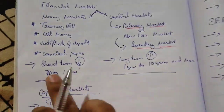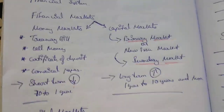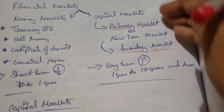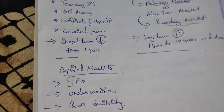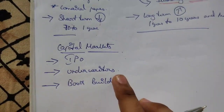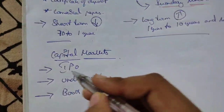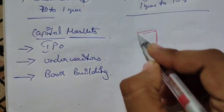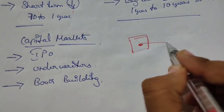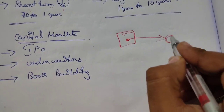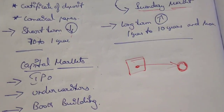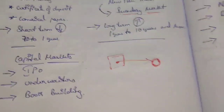Capital market includes a few important points: IPO (Initial Public Offering), underwriters, and book building. IPO is the initial public offering — in the primary market, a new company that wants capital will go to the stock exchange and register there. The stock exchange gives permission to issue shares. The company should be registered with the stock exchange — National Stock Exchange, Bombay Stock Exchange, Baroda Stock Exchange, and many others.